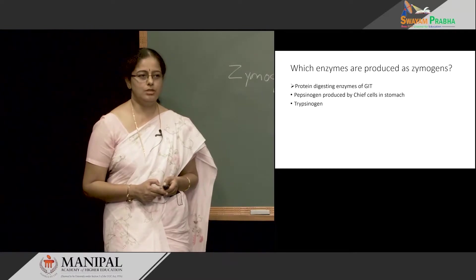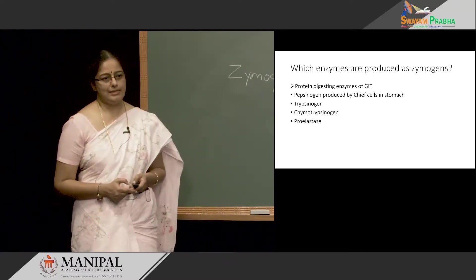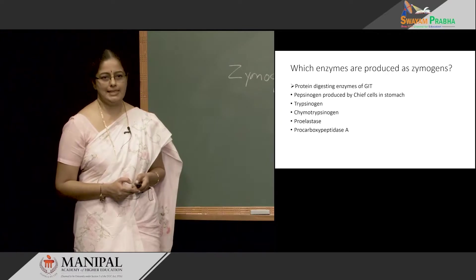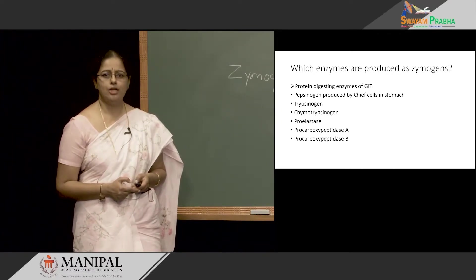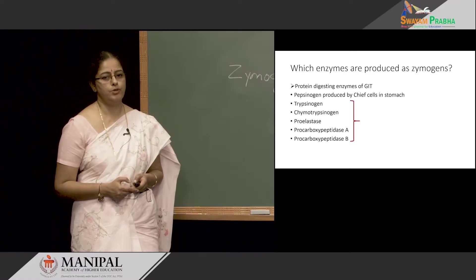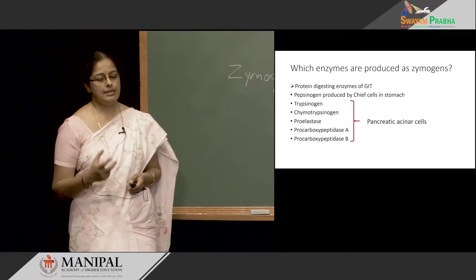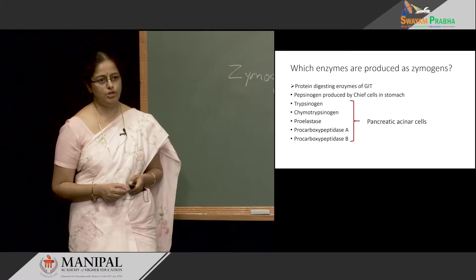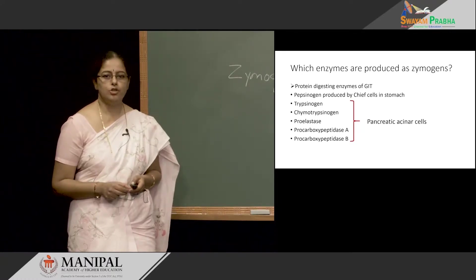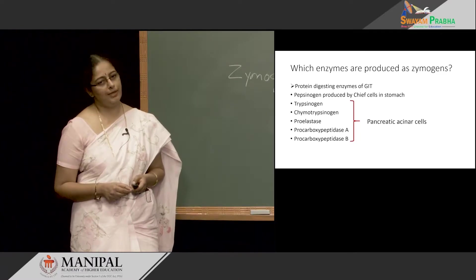We have trypsinogen, chymotrypsinogen, proelastase, procarboxypeptidase A, and procarboxypeptidase B. These are all Zymogens produced in the pancreatic acinar cells. They are synthesized and stored in the pancreas in their Zymogen forms. Once they reach the duodenum in the presence of food, they get activated to their active enzyme form.